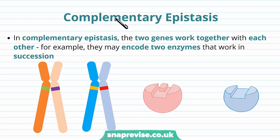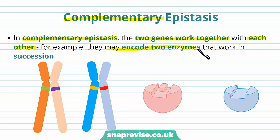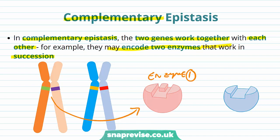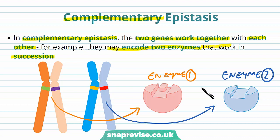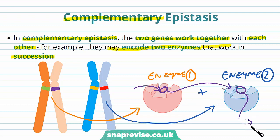We've talked about antagonism with epistasis, but two genes can also encourage each other's expression — this is called complementary epistasis. In complementary epistasis the two genes work together. For example, they might encode two enzymes that work in succession for a reaction, where a substrate enters enzyme one, then goes to enzyme two, and forms a useful product.